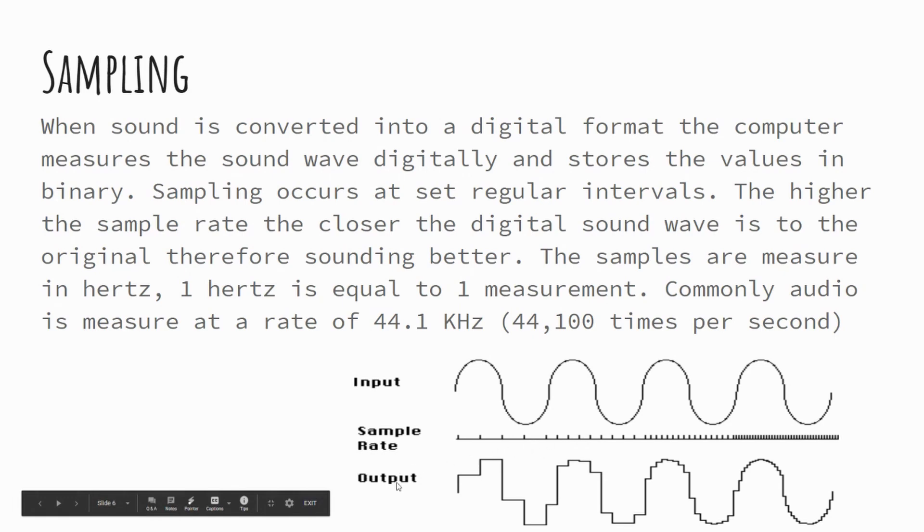Now, the output of those measurements is shown below. So you can see that in a scenario where we have the fewer amount of samples being taken, the less accurate our representation of our analog sound wave is. So the fewer measurements being taken, the less accurate it is. As we move to the right-hand side, where you can see an example of lots of measurements being taken, you can see it's a much closer representation to the actual sound wave.